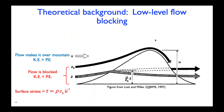Moving on from gravity waves to low-level flow blocking: the near-surface flow doesn't have enough kinetic energy to overcome the potential energy associated with rising over the mountain, so the flow will split and go around the mountain. The surface stress associated with this process is proportional to the blocking height z_b, which is the height of the lowest upstream streamline able to make it over the mountain. It's also proportional to the square of the U wind. In blocking parameterizations, the stress is typically distributed linearly from the surface to a value of zero at the blocking height z_b.